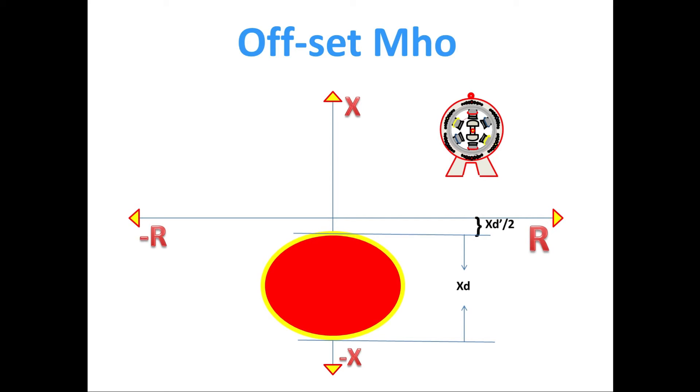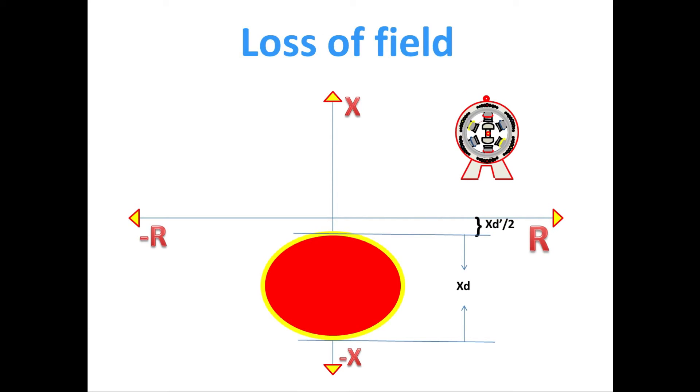So the Mho characteristics is below the zero crossing. In order to avoid the mal-operation on such heavy load, it may be a heavy short circuit fault also. On other case, if the real loss of field occurs, then the generator directly will fall onto this operating region, and it will stay within this region.